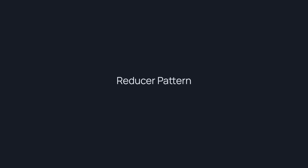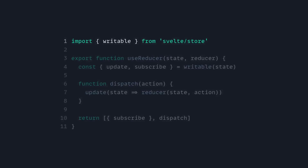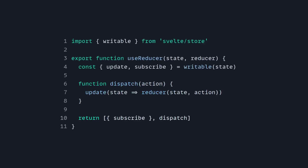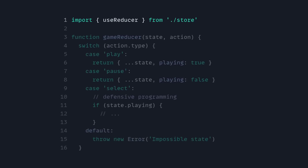So you might be familiar with the reducer pattern. State machines definitely look similar to the reducer pattern. You can actually create a 'use reducer' hook in Svelte using a Svelte store. So you can import a writable, create a function 'use reducer' which you pass the state and the reducer to. Then we destructure 'update' and 'subscribe' from the Svelte store, create a dispatch function that's going to update the store, and then return the subscribe function and the dispatch function. So now we import the reducer from the store, and we have the reducer function which takes a state and action, then switch it based on the type — so it's action driven.